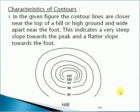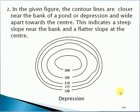In the given figure, the contour lines are closer near the bank of a cone or depression and wide towards the center. This indicates a steep slope near the bank and a flatter slope at the center. This is a depression figure.